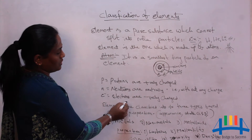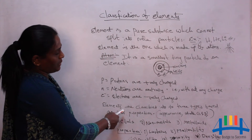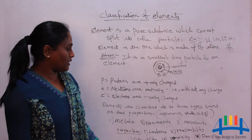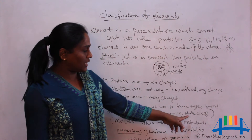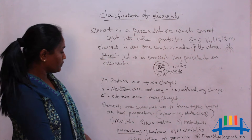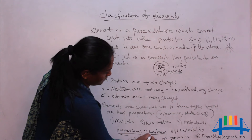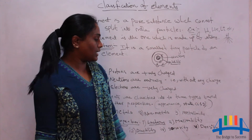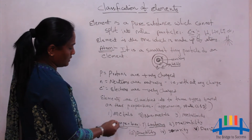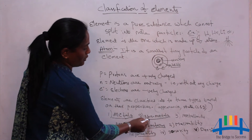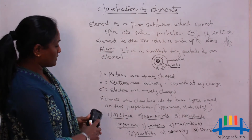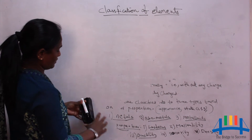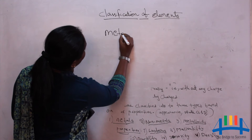Electrons are negatively charged. Elements are classified into three types based on their properties — both physical and chemical. Physical properties include physical state or appearance, such as solid, liquid, or gaseous state, as well as lustre or shininess, malleability, ductility, sonority, and density. Based on all these properties, elements are divided into three types: metals, non-metals, and metalloids.